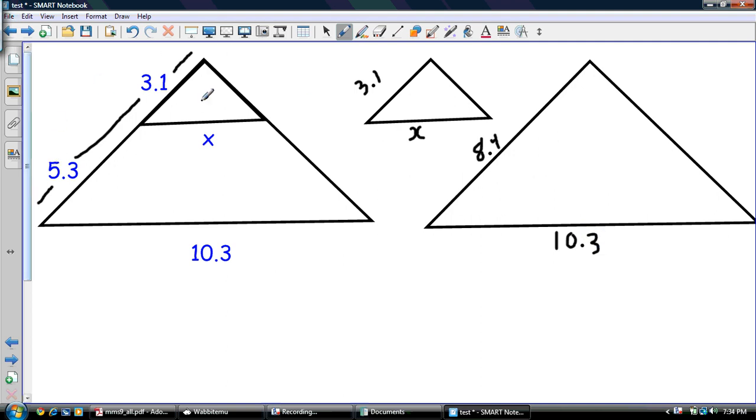8.4, and that side down here is 10.3. So this is where sometimes you have students taking this side of this big triangle to be 5.3, which can throw off an entire ratio. If you remember from our last lecture, ratios of corresponding sides have to be equal. So if you don't have that, then you're not going to get a correct answer.